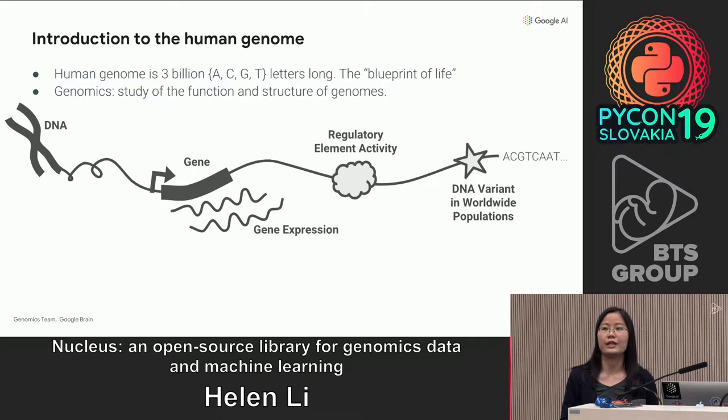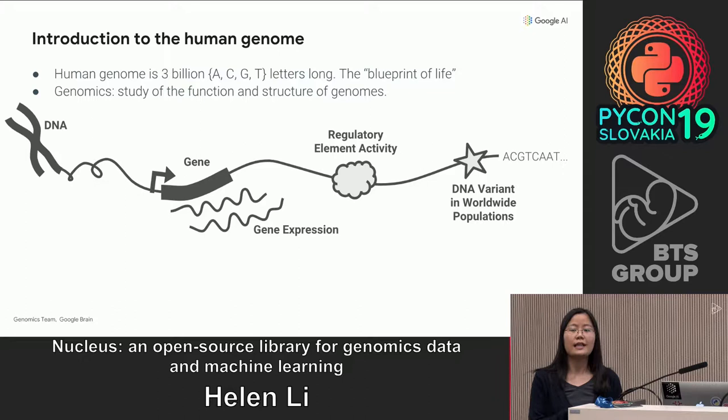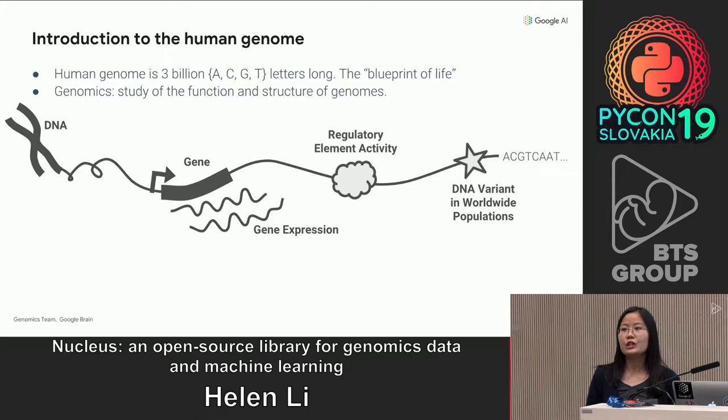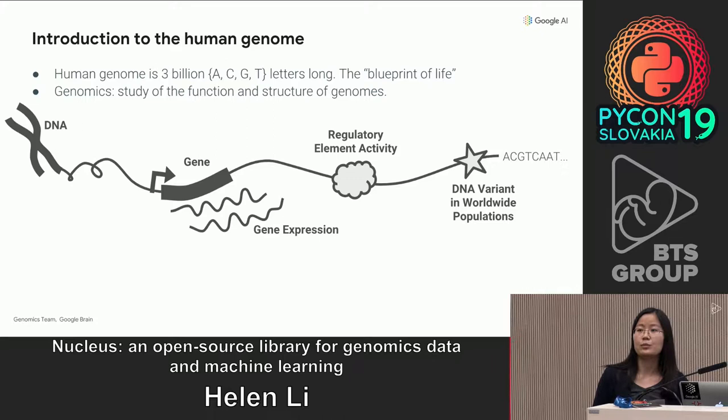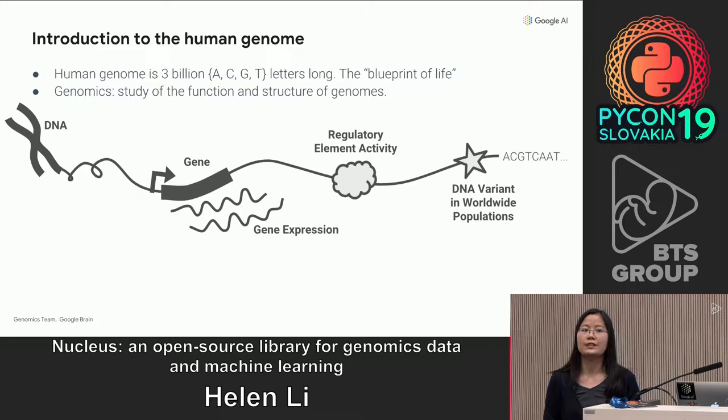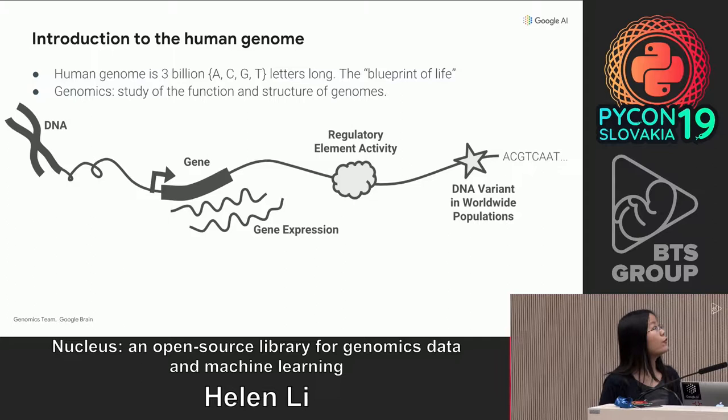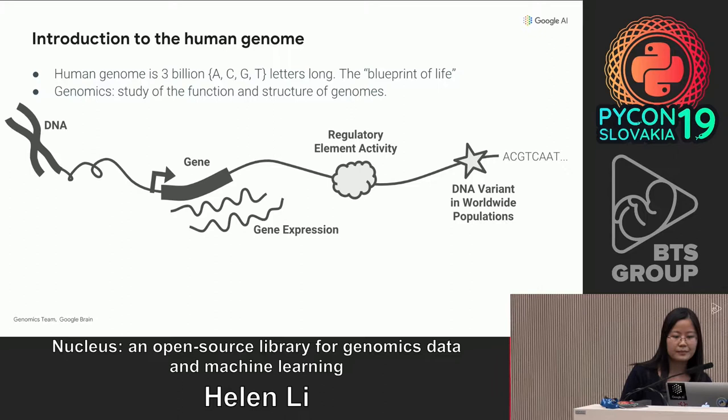So what is genomics? The human genome can be basically thought of as a very long string, and it is three billion letters long. This string uses a four-letter alphabet: A, C, G, and T. Your genome encodes a lot of information about you, so it is also thought of as the blueprint of life. In every cell of your body, you have two copies of the genome, one from each parent. Genomics, on the other hand, refers to the study of the function and structure of genomes.